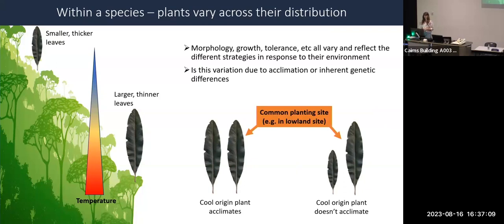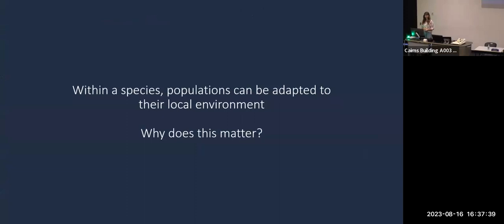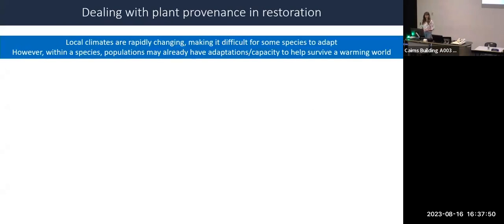Diving into within-species variation: plants vary in their morphology, growth, and tolerance to stress, reflecting different strategies in response to their environment. For example, a species may have thicker or larger leaves in the lowlands and smaller, thicker leaves in the uplands. We can determine whether this is acclimation or adaptation through common garden experiments where plants sourced from uplands and lowlands are planted in a similar environment. Because adaptation occurs over a long process, it's difficult for long-lived species such as trees to adapt to rapidly changing local climates.